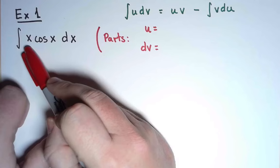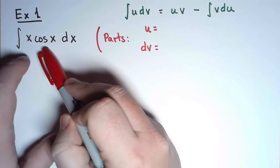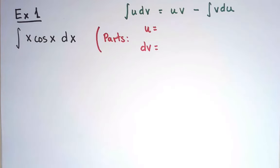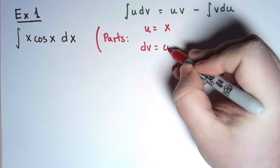If I want the second integral to be easier, it's a good idea to take the derivative of x and the antiderivative of cos x. In other words, I want to take u to be x and dv to be cos x dx.